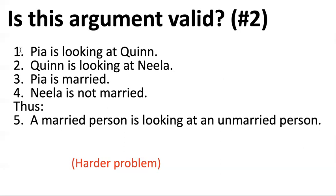Let's assess validity — let's imagine these premises are true again. Pia is looking at Quinn and Quinn is looking at Neela. Pia is married. Neela is not married. If we imagine all those things are true, is it the case that a married person must be looking at an unmarried person? Does this conclusion have to be true? It's natural to think not, because we don't know anything about Quinn's marital status.